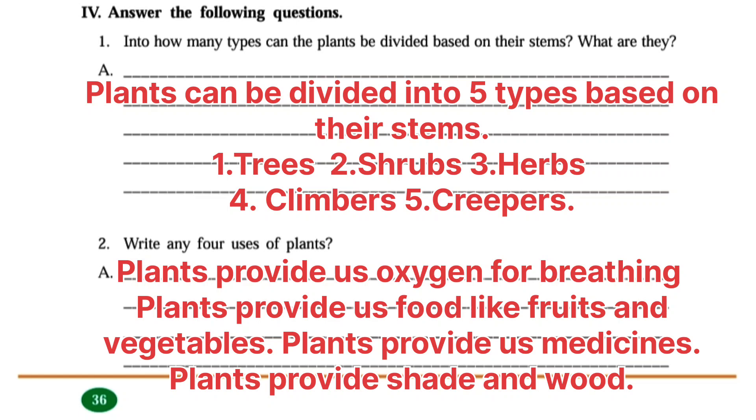Write any four uses of plants. Answer: Plants provide us oxygen for breathing. Plants provide us food like fruits and vegetables. Plants provide us medicines. Plants provide shade and wood.